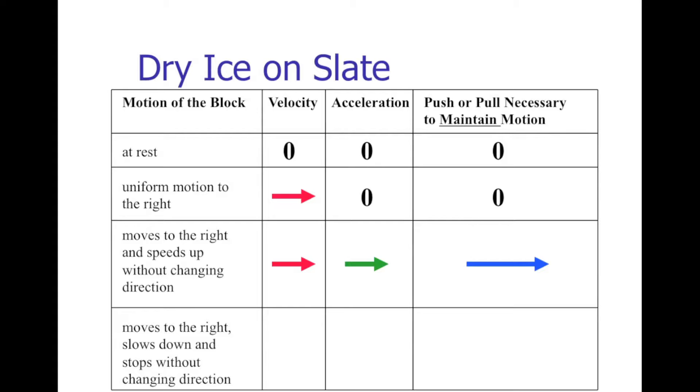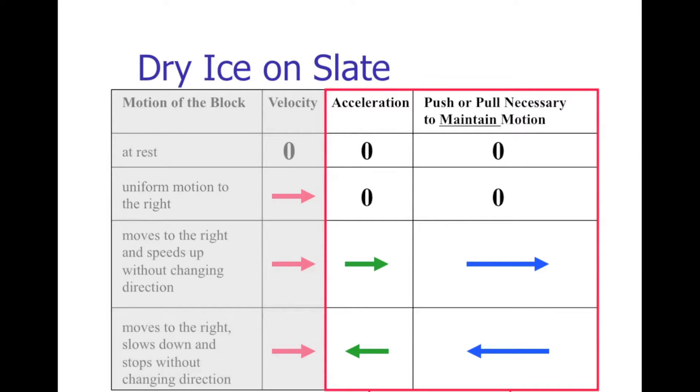If I want it to move to the right, slow down, and then stop without changing direction, then I want it to move to the right, so it will have a velocity to the right. It will have acceleration, but because it's slowing down, the acceleration will be to the left. And then, if I want it to stop without changing direction, I need to apply that force to the left on the block, so that it accelerates to the left. And as soon as it stops, I need to let go, because if I keep applying that force to the left, it will start moving to the left when it gets to a zero speed.